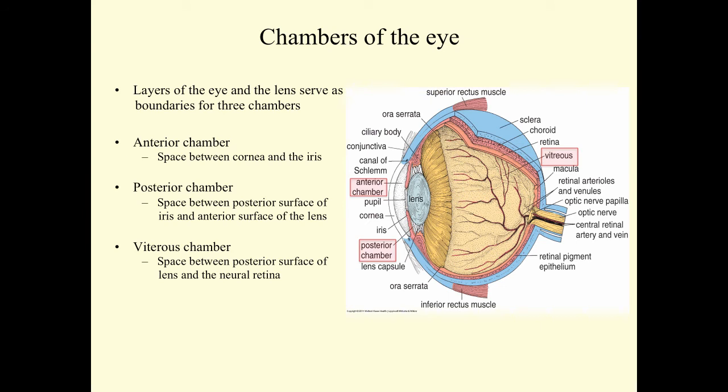We can talk about chambers in the eye. The layers of the eye wall and the lens itself serve as the boundaries for three chambers in the eye. There's an anterior chamber shown on the diagram. It's the space between the cornea and the iris. The posterior chamber is the space between the posterior surface of the iris and the anterior surface of the lens. And then the vitreous chamber would be the space between the posterior surface of the lens and the neural retina.